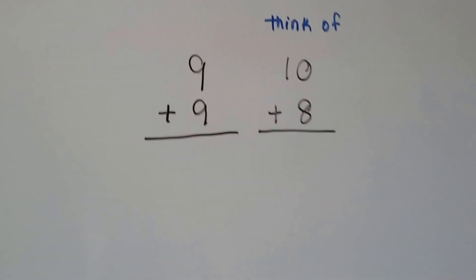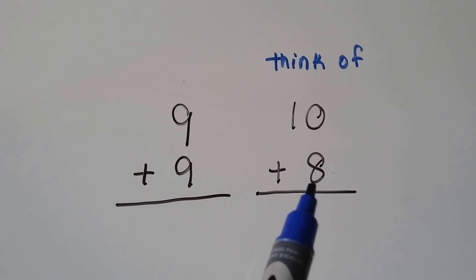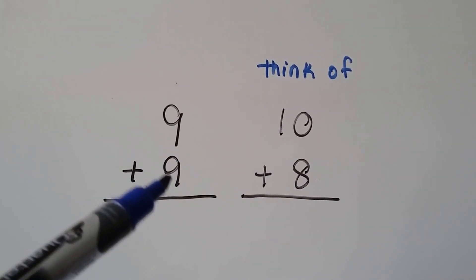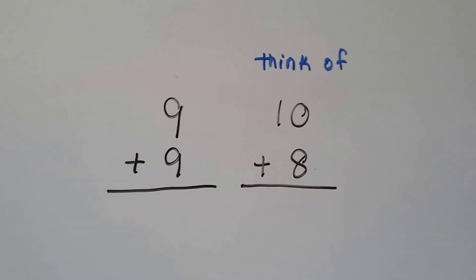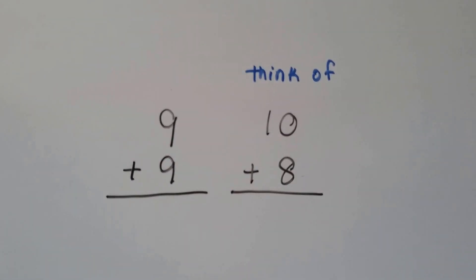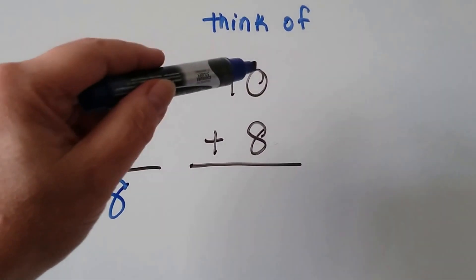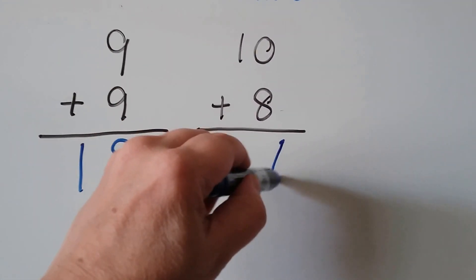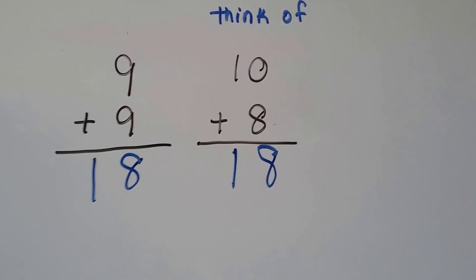Let's try it again — we have 9 plus 9. So think 10 plus 8. We gave 1 of these to this one to make a 10, and it became an 8. 9 plus 9 is 18. We have 0 plus 8, that's 8, and we drop our 1 down — we have 18.